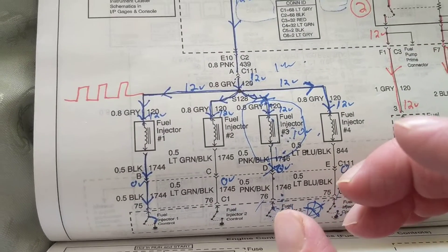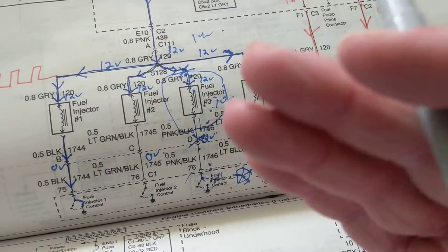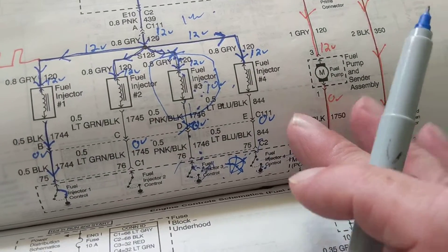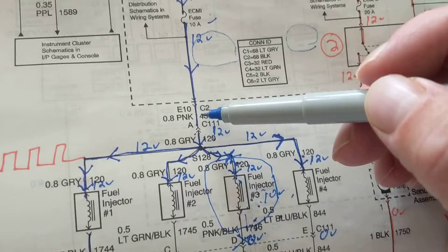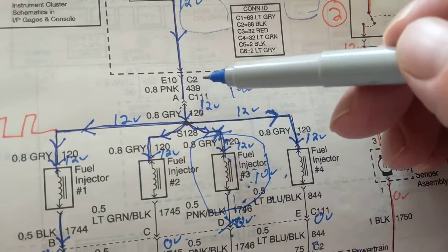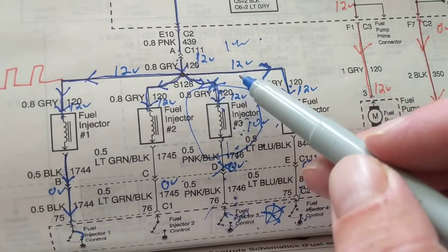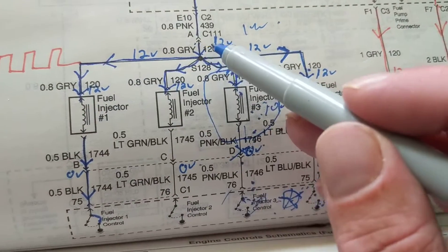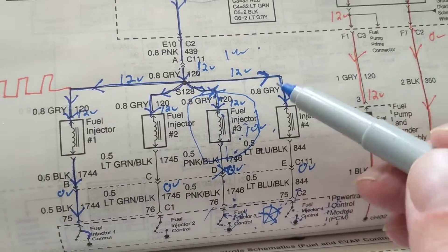As you see over here, this current comes to this point, goes to a connector - a pink wire, now becomes a gray wire. It comes to a splice. A splice is a point where many connections are involved. So the current divides - the current goes this way, goes this way, goes this way. The current goes into four different branches to go into the fuel injector.